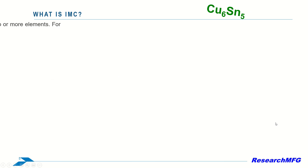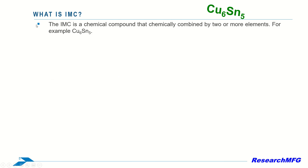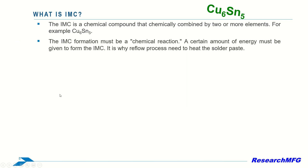The IMC is a chemical compound formed by two or more elements — for example, Cu6Sn5. The IMC formation must be a chemical reaction. Since IMC is a chemical formula, its formation requires a chemical reaction. Providing thermal energy to form the IMC is necessary. This is why solder paste needs to go through a reflow oven at high temperature to melt and form the IMC bonding.